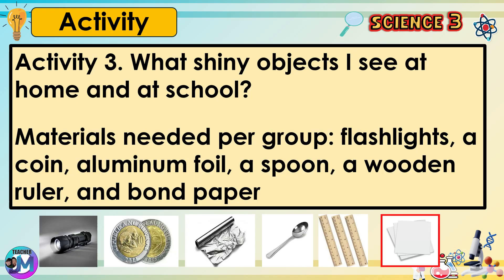Activity 3: What shiny objects I see at home and at school. Materials needed per group: flashlights, a coin, aluminum foil, a spoon, a wooden ruler, and bond paper.